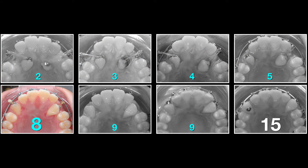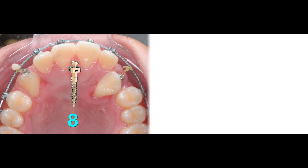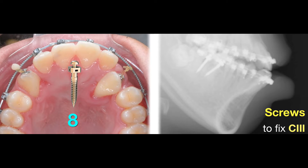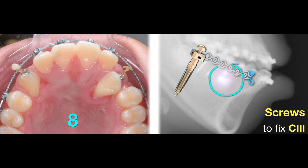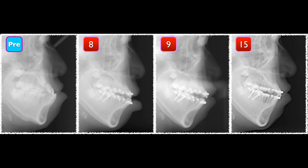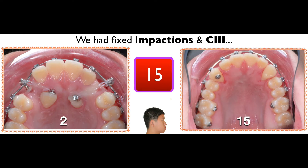Five months into treatment, we'll be able to use the screw to bring the cuspid to the arch. Eight months into treatment, we're ready to remove the screw. When you remove it, remember we still have the Class 3 to deal with — don't waste your screw. Use it to create a buccal shelf screw, put it back in the buccal shelf, and create a full system to rotate the mandibular plane. Fifteen months into treatment, we've solved two major problems: number one, impaction; number two, Class 3.